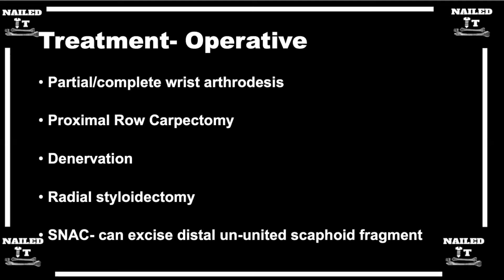Regarding treatment options, it goes back to the staging system — specifically the SLAC staging. In stage one, where there's radial styloid and scaphoid arthritis but not scaphoid fossa or proximal pole involvement, there are more options. If the scaphoid is reducible — normally they come in flexion, but if they come out of flexion back into a more extended position — you can do a styloidectomy with reconstruction of the SL ligament, with the goal of preventing further arthritis.